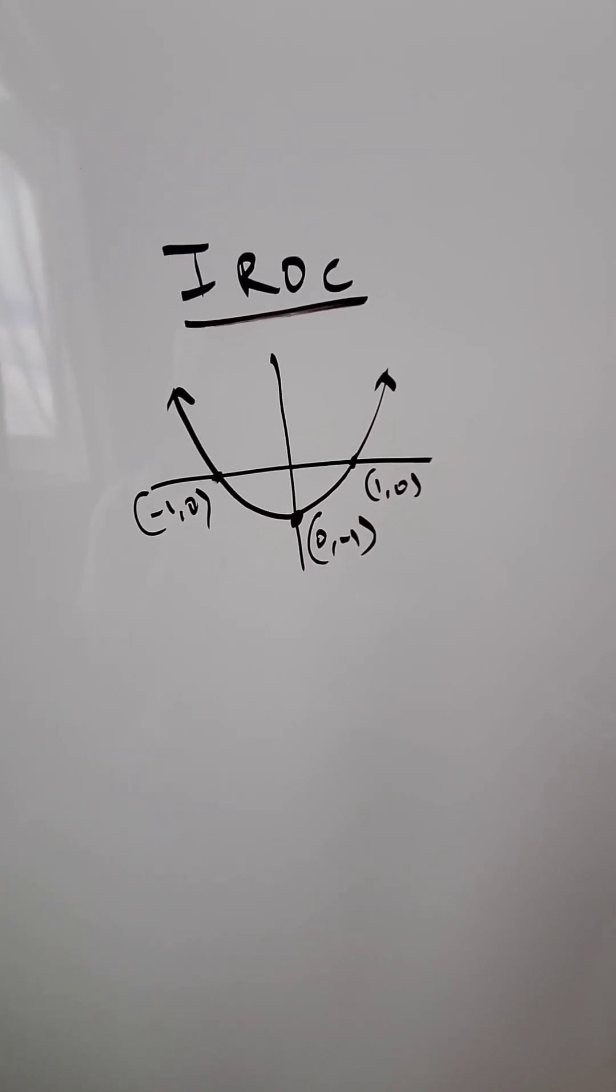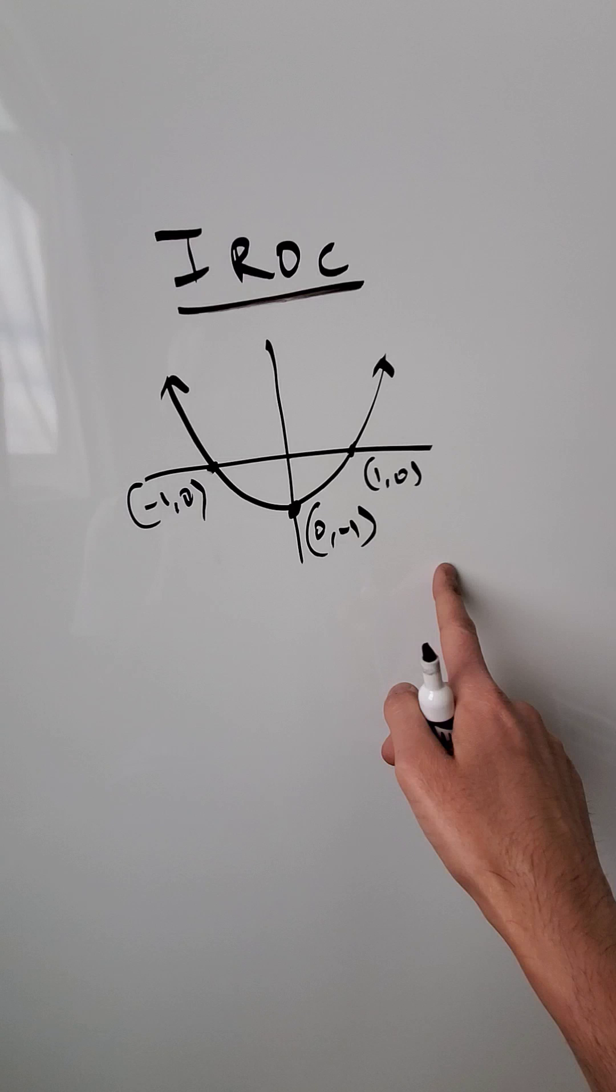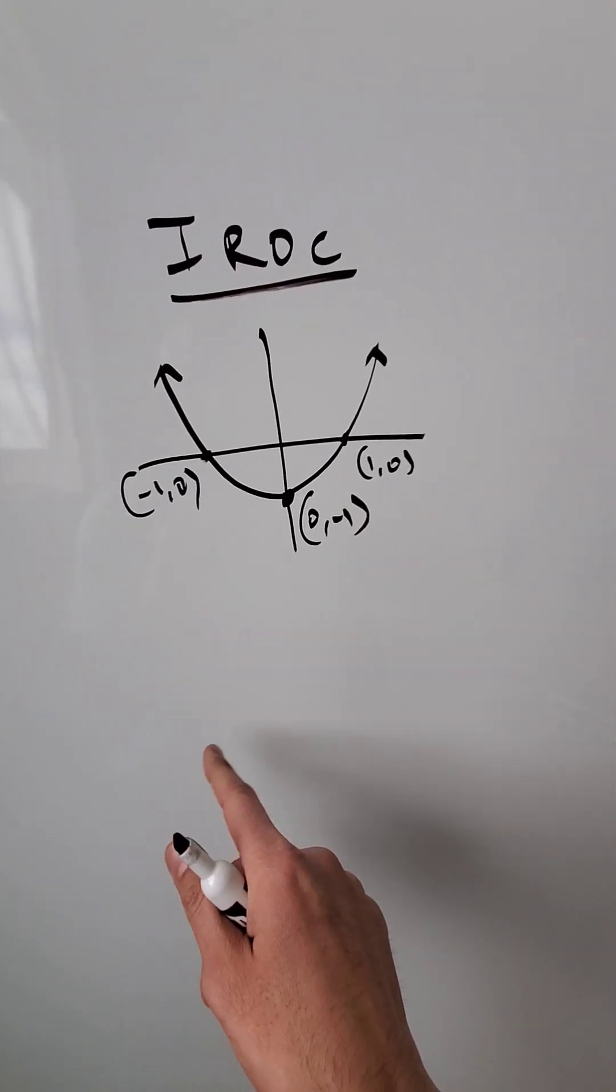Let's understand what the IROC is, the instantaneous rate of change. It is the slope you are determining of a function at particular points.